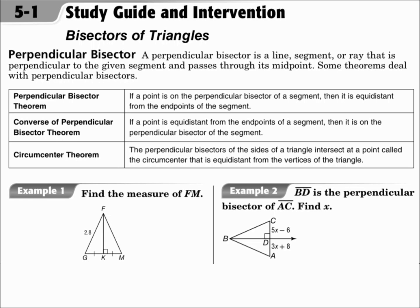A perpendicular bisector is a line, segment, or ray that is perpendicular to a segment and passes through the midpoint. The perpendicular bisector theorem says that if a point is on the perpendicular bisector of a segment, then it's equidistant from the endpoints of the segment, so you could have equal measures there.